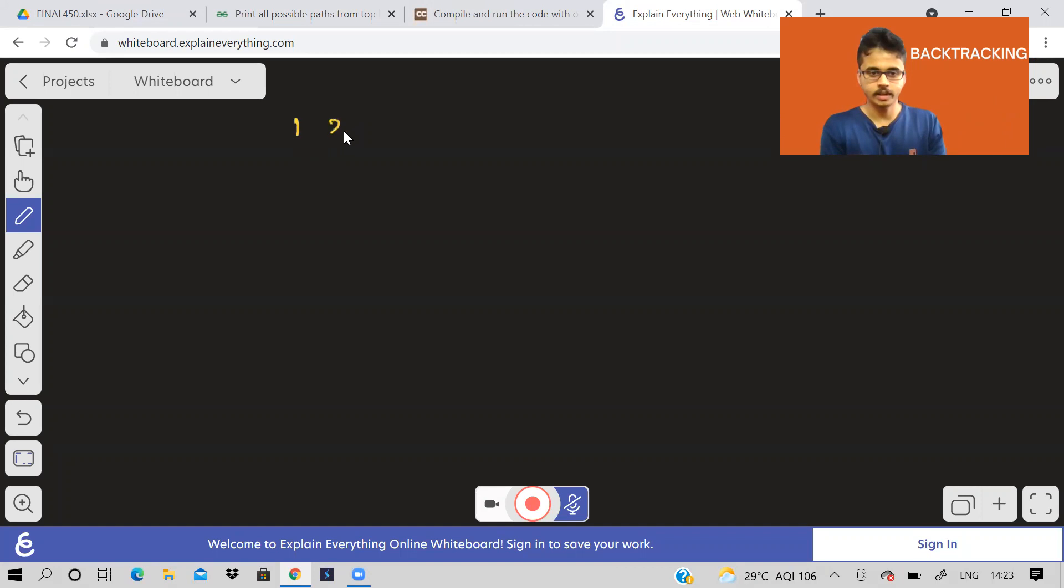I'll write here, consider this matrix 1, 2, 3, 4, 5, 6. This is top left and this is bottom right. So from top left to bottom right, we have to only move right or down at any point.